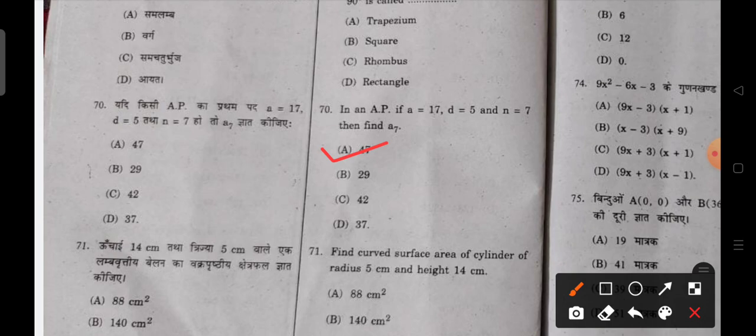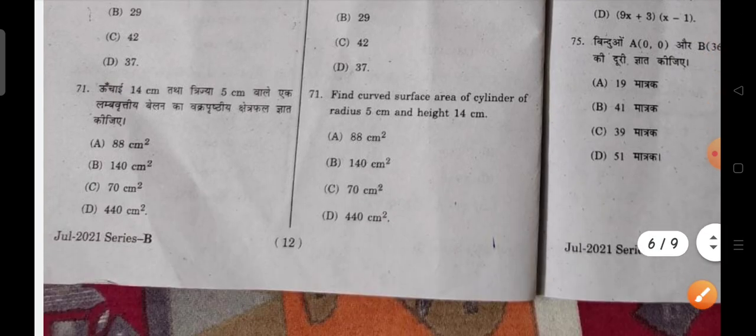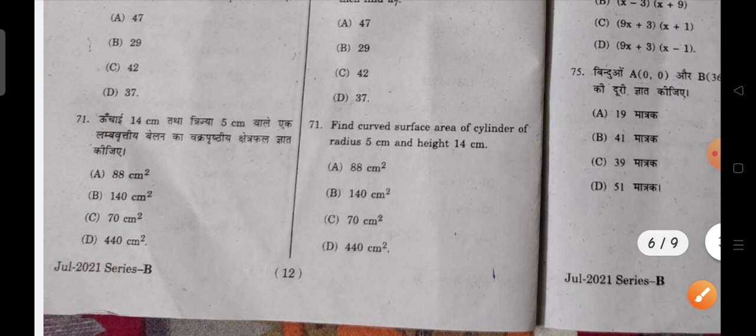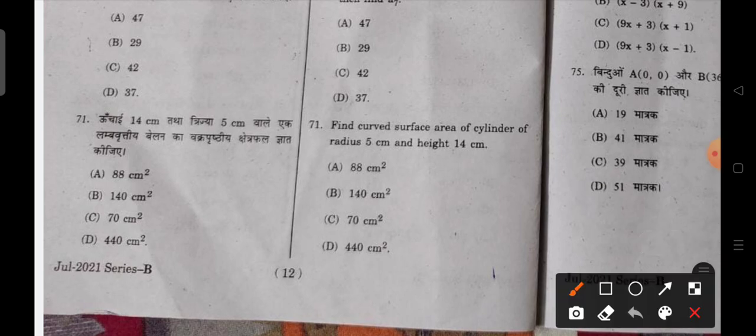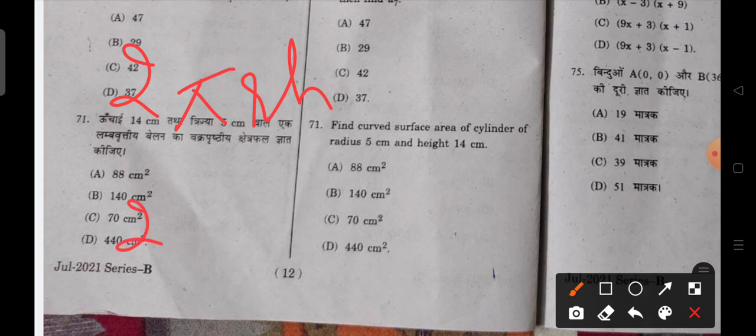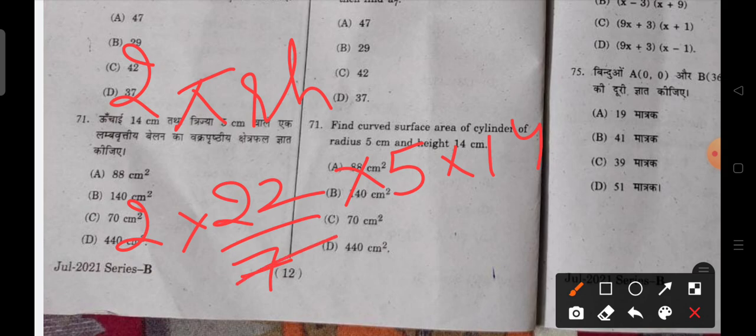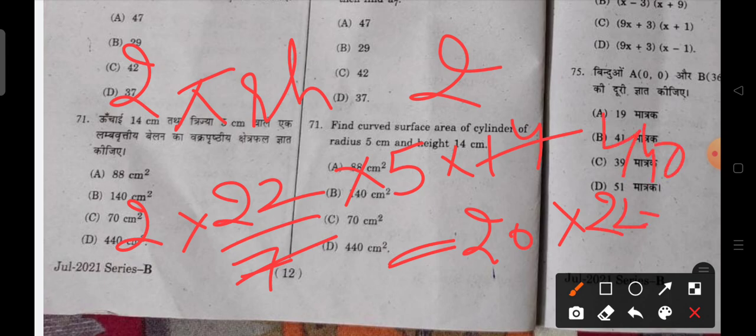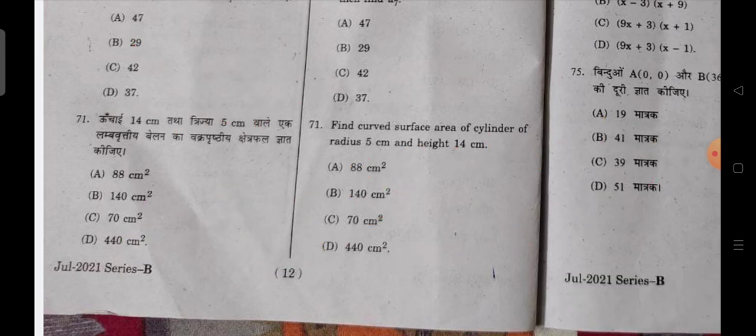Next question is curved surface area of a cylinder of radius 5 cm and height given. You should know this formula. What is the formula of curved surface area? That is 2 pi r h. So 2 times 22 upon 7 into r, r is 5 and 14 is your height. So you will solve it. 20 into 22, that is 440 cm squared. D is the correct answer.